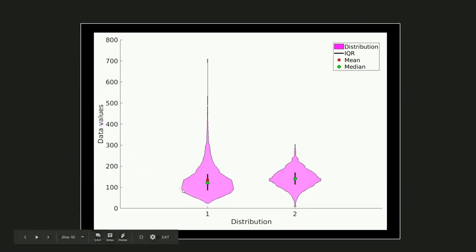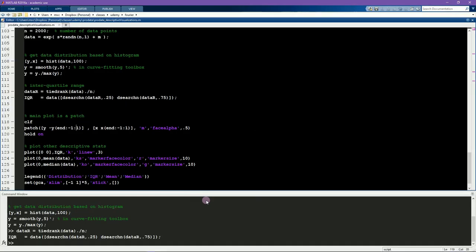So basically we're going to specify all these points up here, and then we specify these points down here. And that's how the patch function works.